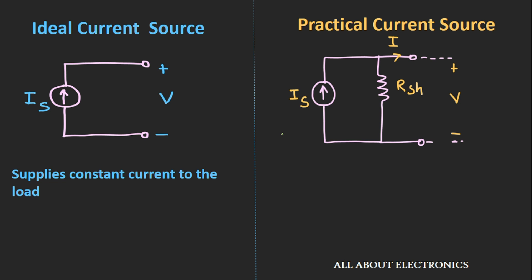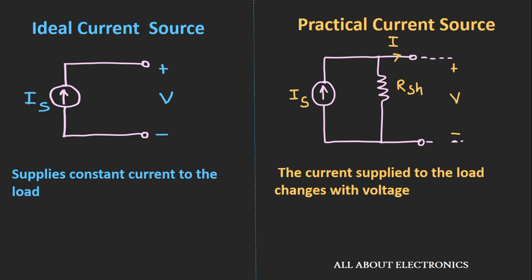In case of an ideal current source, it supplies a constant current to the load no matter what voltage appears across this current source. In case of a practical current source, the current supplied to the load depends upon the voltage that appears across this current source. As the voltage across this current source increases, the amount of current that flows through the load will reduce. Or in other words, as the load resistance increases, the amount of current that flows through this load will reduce.